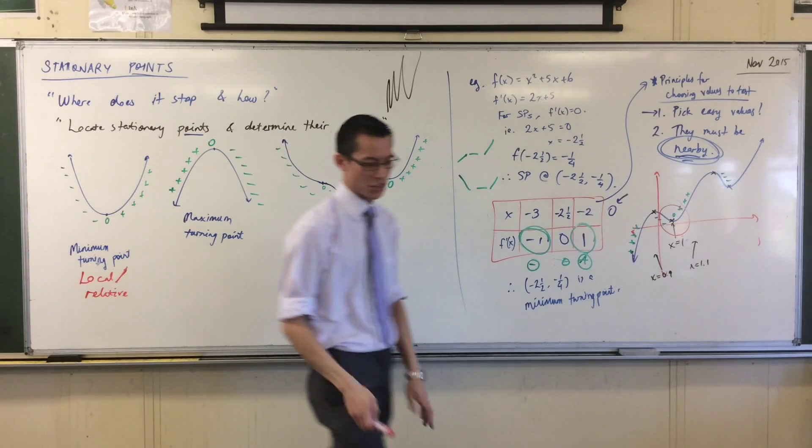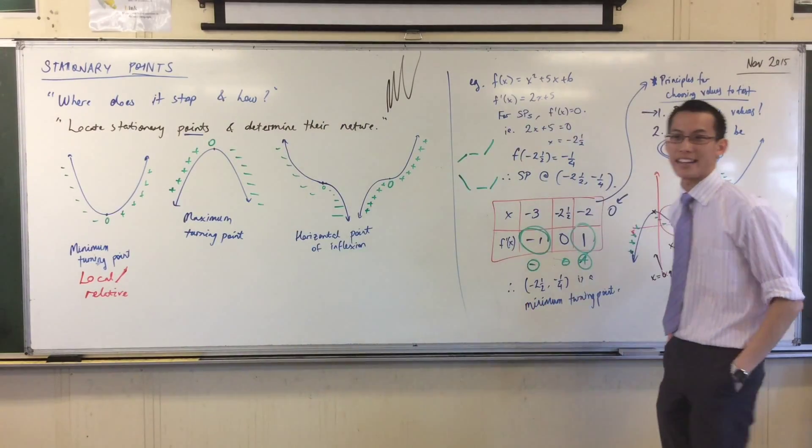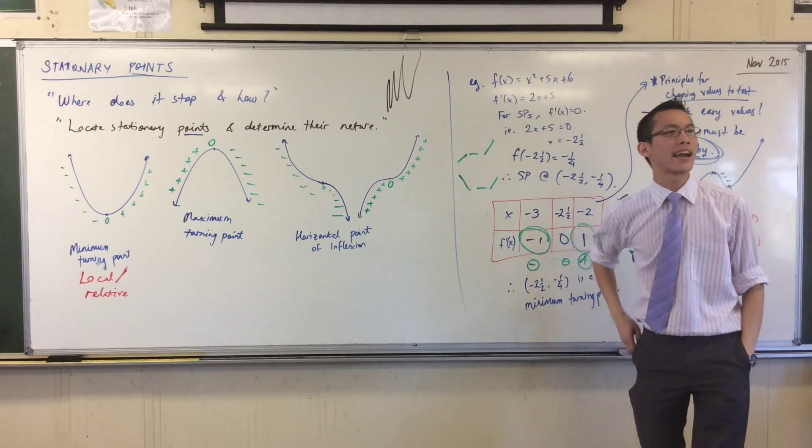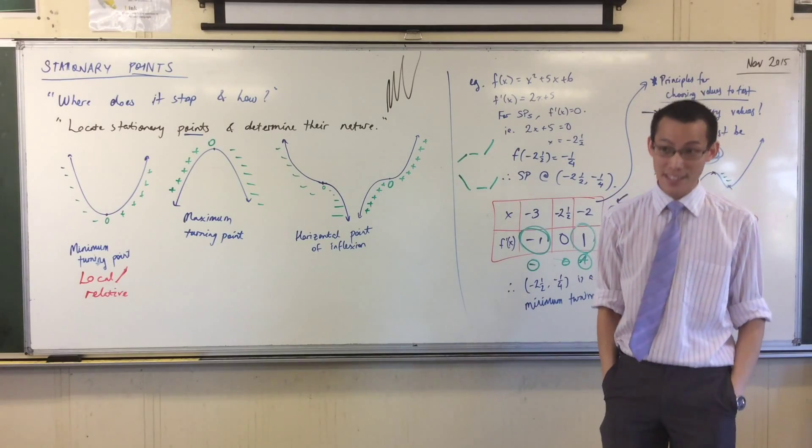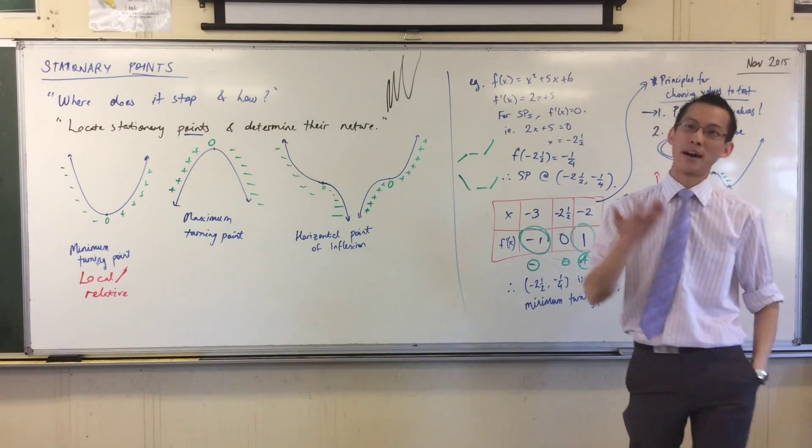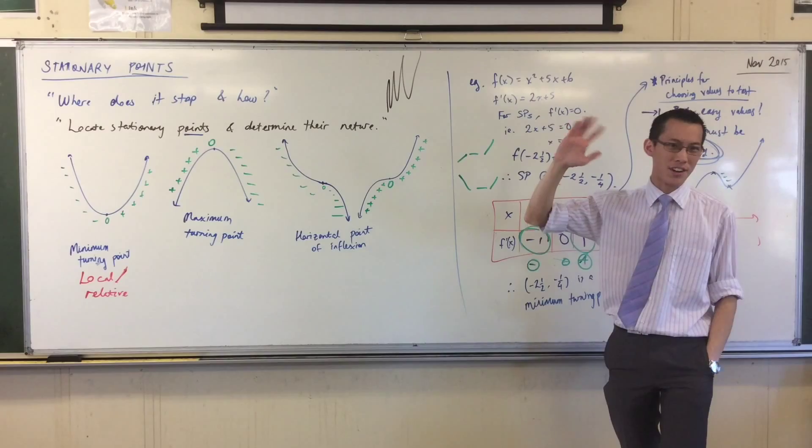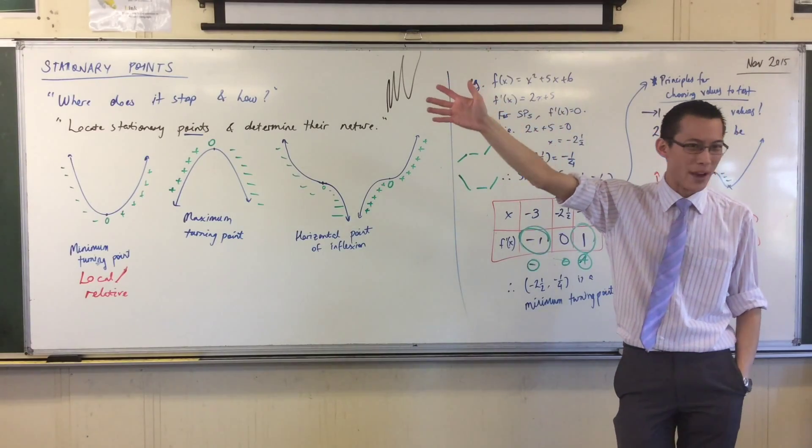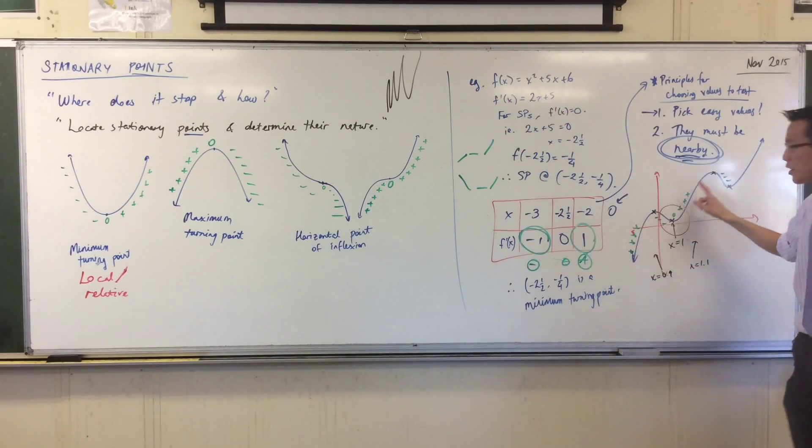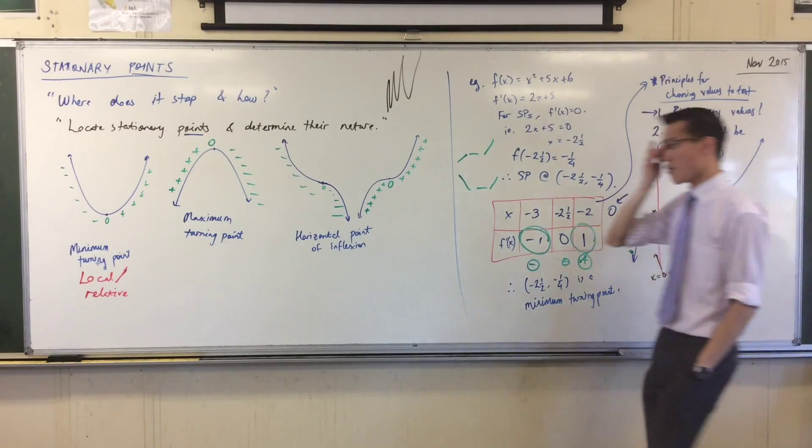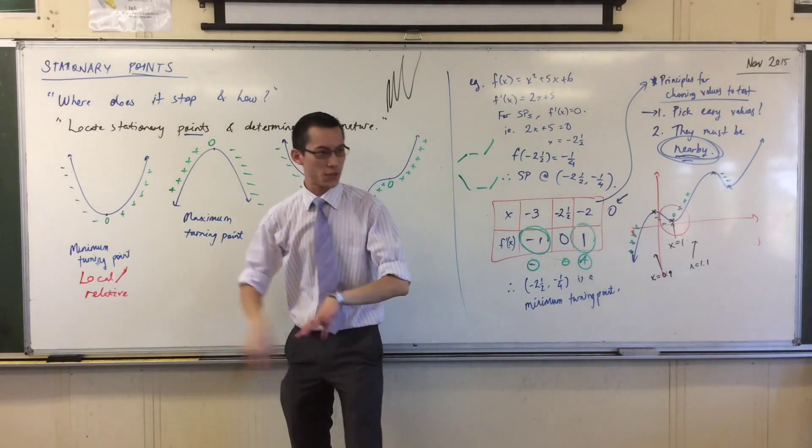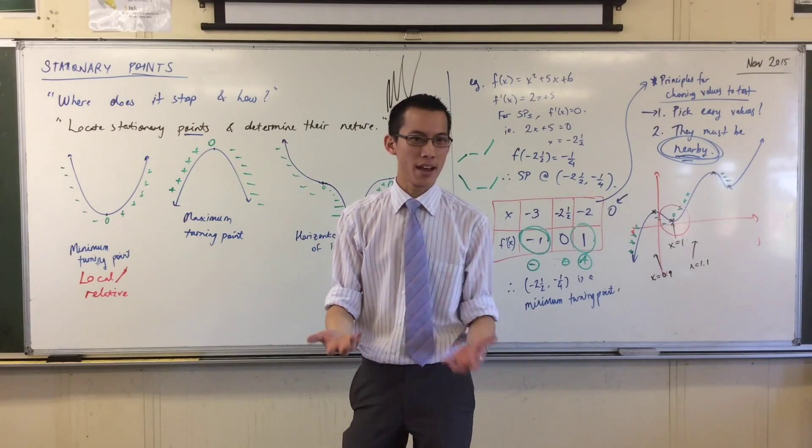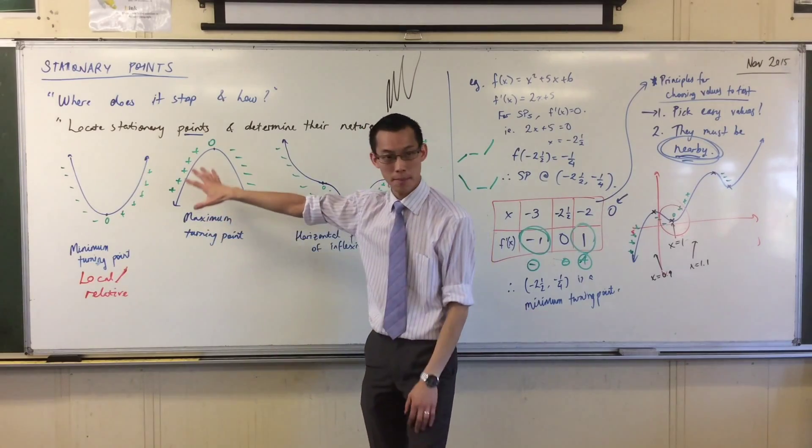So for instance, I could say, the relative maximum height in this room is, Mark, how tall are you? 186. Pretty tall, but if we go to an NBA game in the US, that local maximum will very quickly be exceeded. So relatively speaking, relative to all of us here in this room, that's the maximum or the minimum.